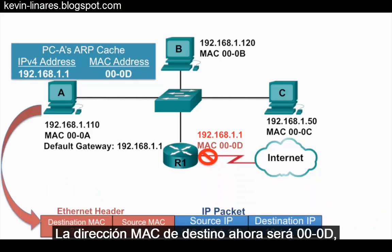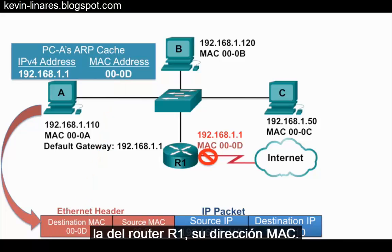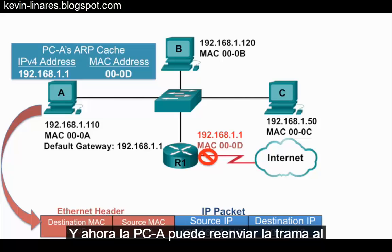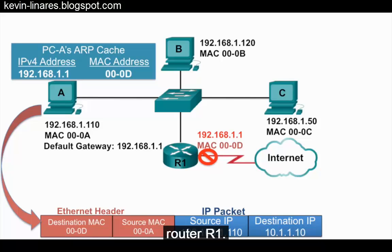So the destination MAC address is now going to be 000d, that of router R1, its MAC address. And now PCA can forward the frame onto router R1.